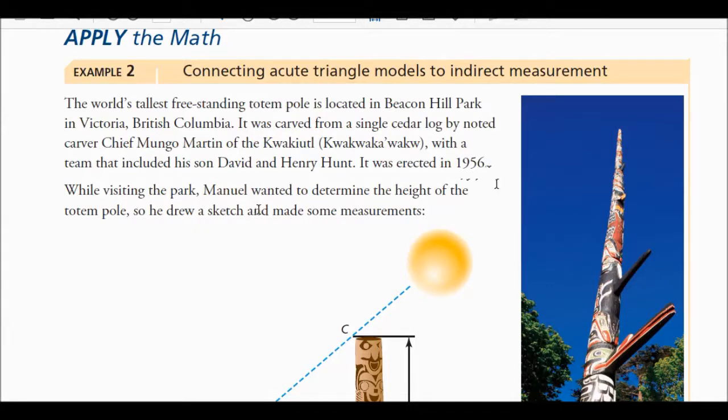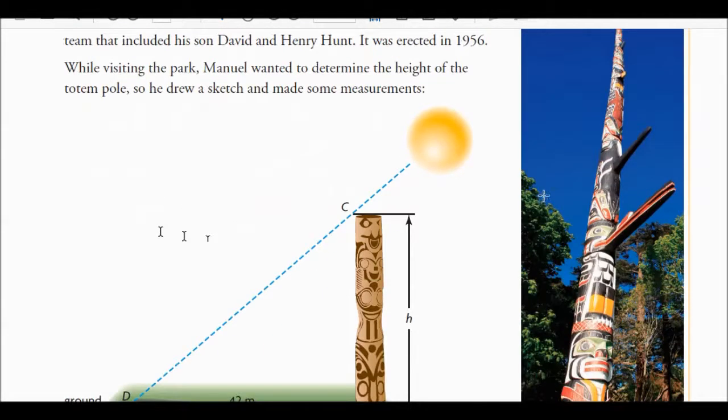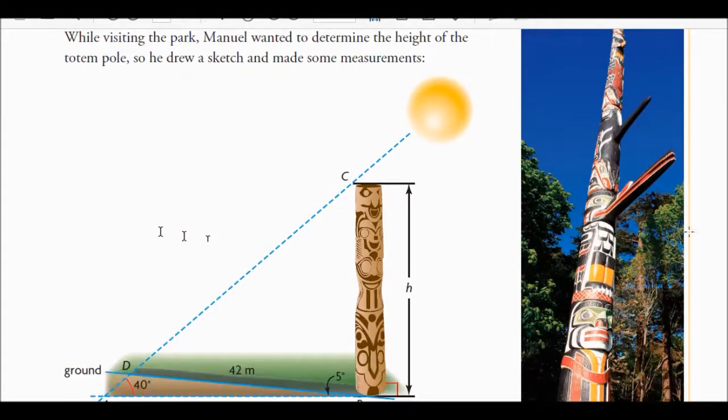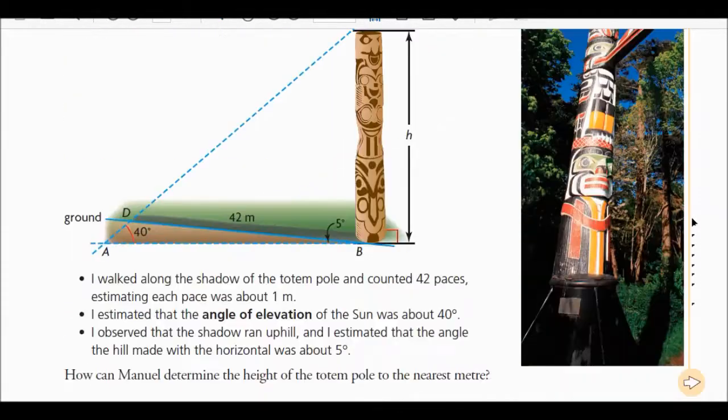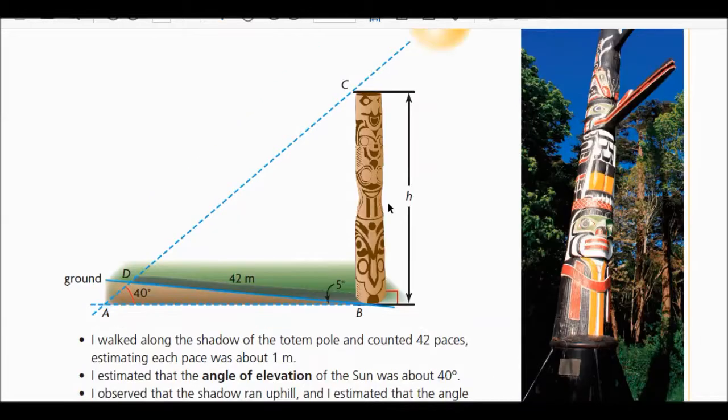While visiting the park, Manuel wanted to determine the height of the totem pole, so he drew a sketch and made some measurements. There's a picture of the actual totem pole there. It's pretty impressive, pretty tall, still standing. Amazing. So here's the diagram that you guys have just quickly sketched here. It's a totem pole. Now, obviously the ground is not level ground, so we don't have a 90 degree angle here.